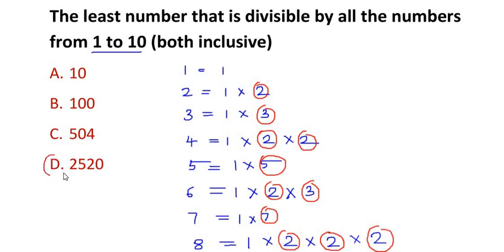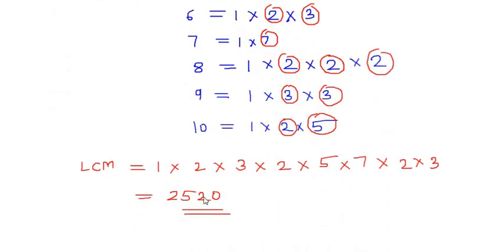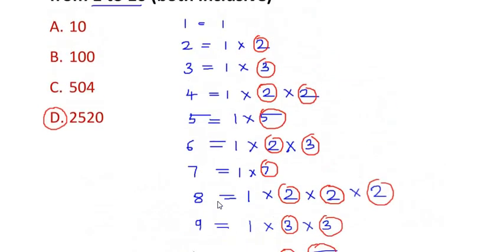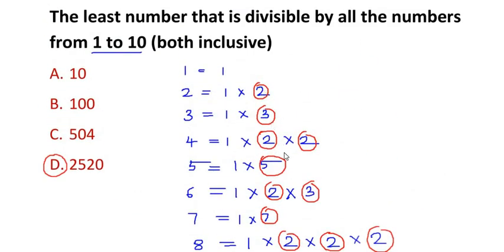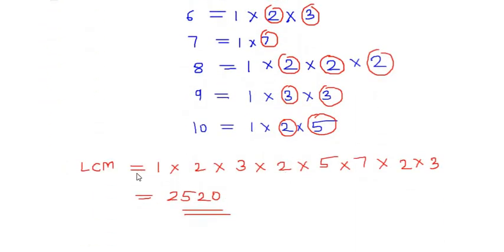So this is the least number that is divisible by all the numbers from 1 to 10 because we got the LCM as 2520. So this is how we solve the given example by finding out the factors of each number from 1 to 10 and then finding out the LCM.